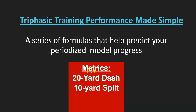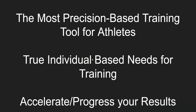Basically, the metrics you need are a 20-yard dash with the 10-yard split. You can do that with timing gates, or take a side video of a 20, put up a cone at the 10, and get the video time when you cross the 10 and the 20. It's the most precision-based training tool for athletes — it gives you individualized training needs so you know exactly what you need, and it will accelerate your results faster than I've ever seen.